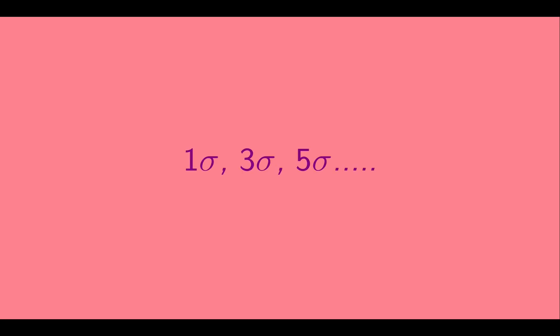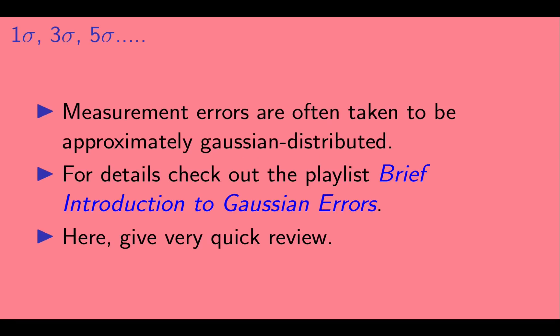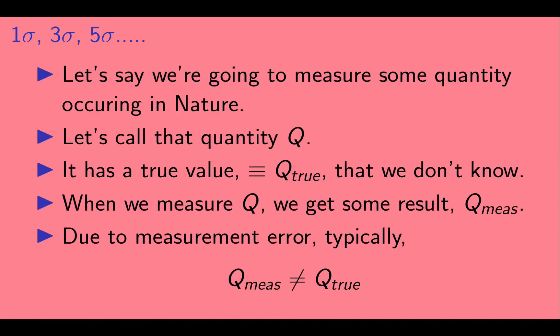Okay, let's start with 1 sigma, 3 sigma, 5 sigma. Measurement errors are often taken to be approximately Gaussian distributed. For details, check out the playlist Brief Introduction to Gaussian Errors. Here we will just give a quick review. Let's say we're going to measure some quantity occurring in nature. Let's call that quantity Q. Q could be something like a particle mass or lifetime. It has a true value, which we will call Q true. We don't know Q true. When we measure Q, we will get some result of our experiment, which we'll call Q measured. Measurements aren't perfect though, and there are measurement errors. Thus, typically, Q measured does not equal Q true.